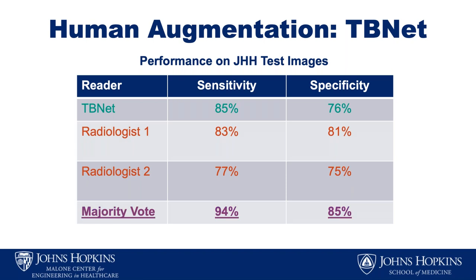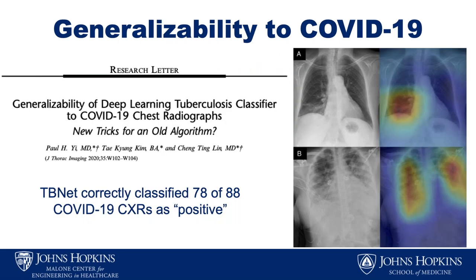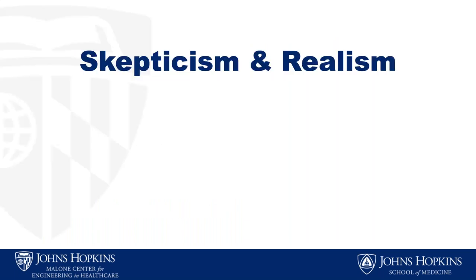When combining the algorithm and radiologist results in a majority vote, there was a synergistic effect with increased sensitivity and specificity compared to any one observer alone. We also evaluated whether this could identify COVID-19 and found it generalized pretty well — though it's worth noting that many diseases like COVID and tuberculosis can look pretty similar on chest radiographs.